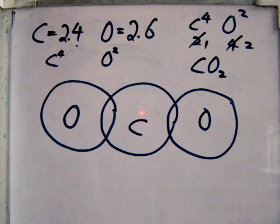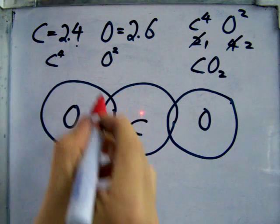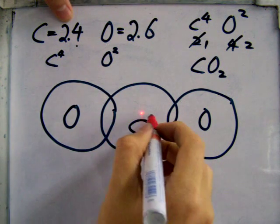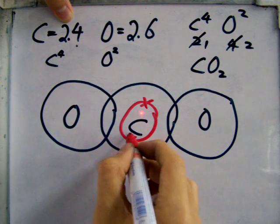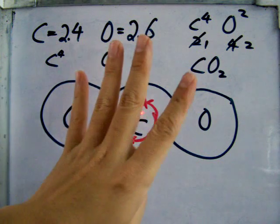So next, we start from C first. Okay, C. Two point four, two point four. Two first, two. Okay. And then four. Okay, four. Yes, four valence electrons.